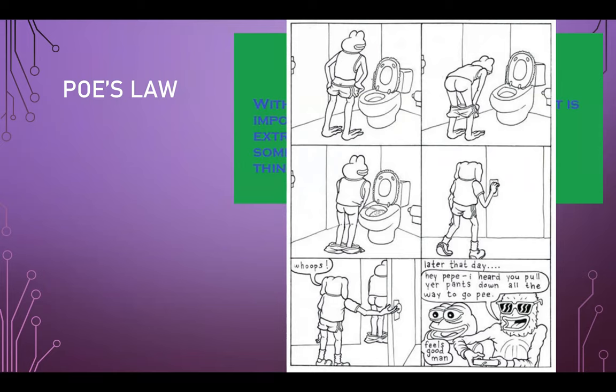It was adopted as a joke because no one could possibly believe this innocent cartoon frog could have anything to do with hate. Same deal with the OK hand symbol — started on image boards as a joke to see if they could get people to think it was a white supremacist gesture. And they did. But then it stopped being a joke because of Poe's Law: actual white supremacists didn't realize it was a joke and started doing it for real.